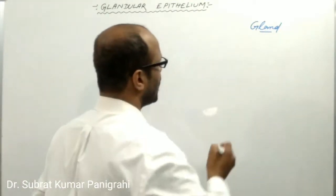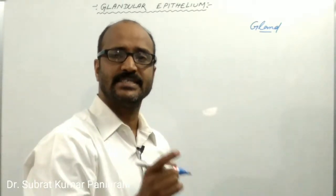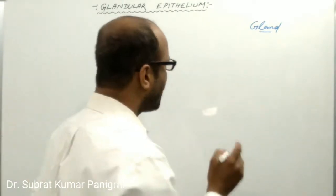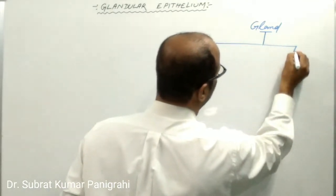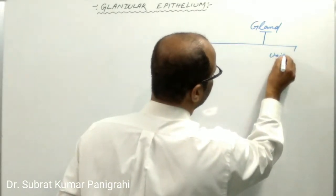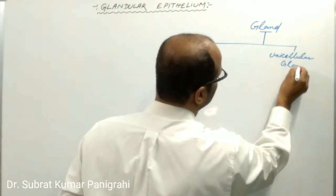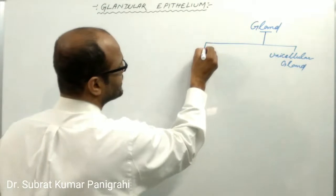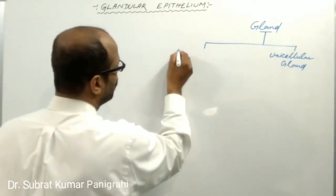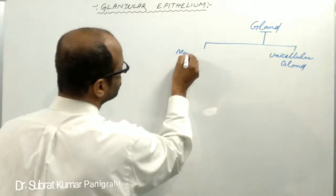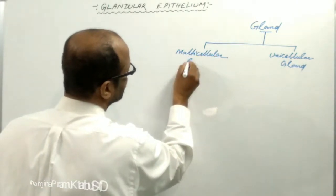If such secreting cells are present singly among non-secretory cells, then they form the unicellular gland. If such secreting cells are present in a group, then they form the multicellular gland.